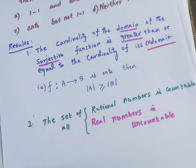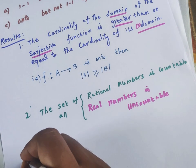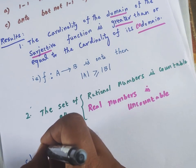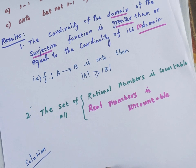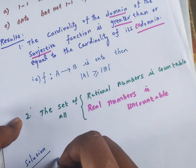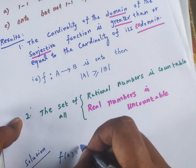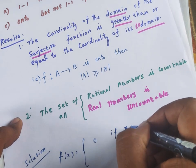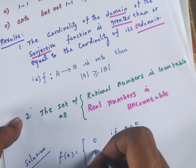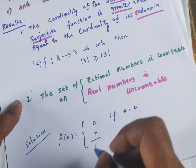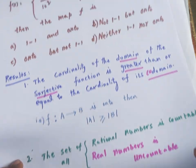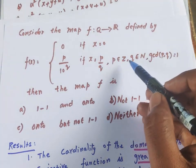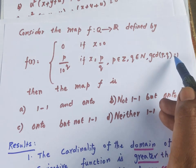Now let's prove the solution. The function f is defined as: f(x) = 0 if x = 0, and f(x) = p / 10^q otherwise, under the conditions that x = p/q where p is an integer, q is in N, and gcd(p, q) = 1.